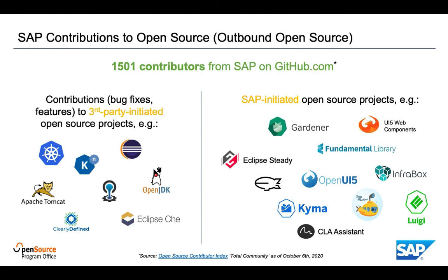Examples for this are, for instance, our Gardener project for managing large-scale Kubernetes clusters, or our Kyma project, which is a side-by-side extension platform for cloud-native applications. When SAP developers fix bugs in open source components that they are using, we always encourage them to contribute those bug fixes upstream. This is a win-win situation for the open source project, which gets a fix, but also for SAP, because when we consume future versions of the project, we are not running into merge conflicts and merge efforts for those bug fixes again.